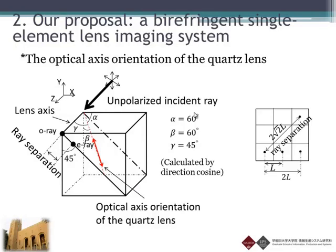This shows the optical axis orientation of the proposed lens. The optical axis of the quartz is located in a plane that is 45 degrees with respect to the YZ plane, 45 degrees with respect to the XZ plane, and also 45 degrees with respect to the Z axis. We calculate the angles alpha, beta, and gamma by direction cosine, and these angles are shown here.